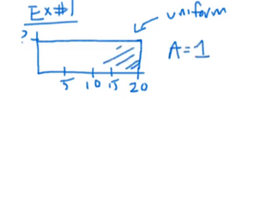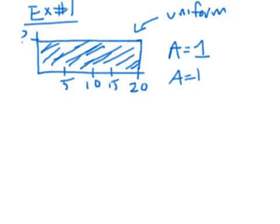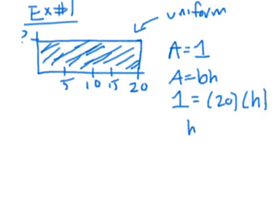The area has to be 1 and the base is 20, so the height has to be 1/20th, or 0.05. We'll also encounter density curves shaped like triangles. For example, if a triangular density curve has a base of 4, you use the area of a triangle formula: area equals one-half times base times height. Setting that equal to 1 and solving gives a height of 0.5.